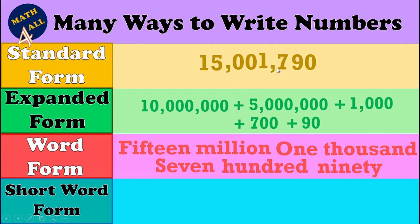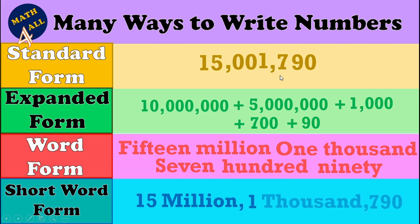For the short word form, we write the name of the house in letters and the rest of the number in digits. So I write fifteen in digits and million in letters: fifteen million. Then one thousand in letters, and seven hundred ninety in digits: one thousand, seven hundred ninety. We just write the name of the house in letters — this is the short word form.